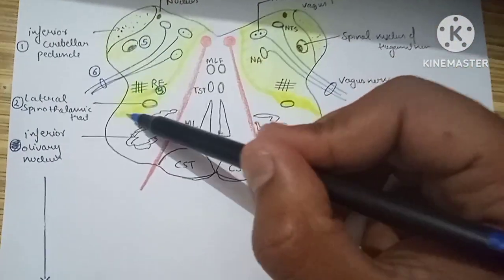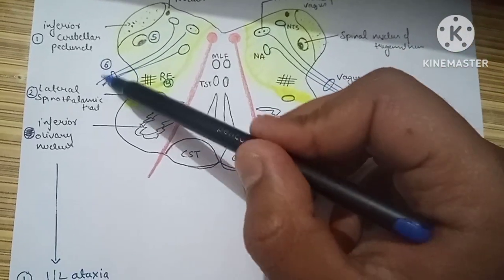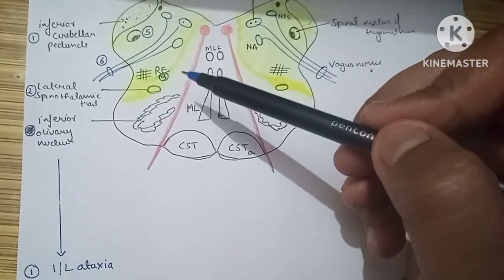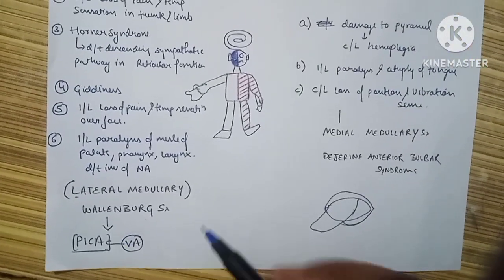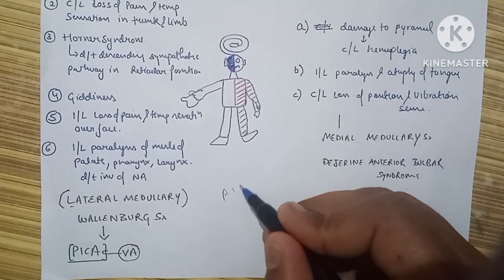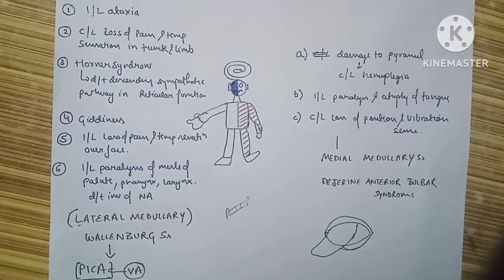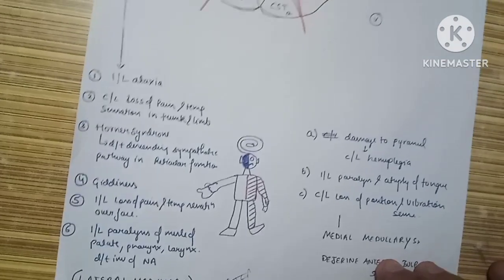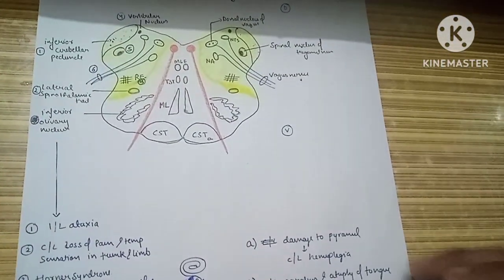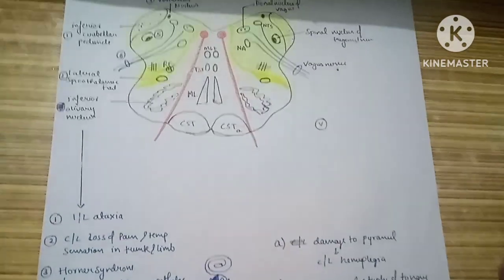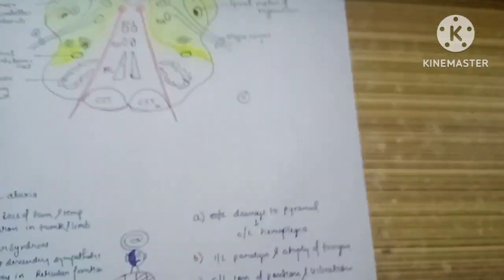The dorsolateral part of the medulla is supplied by PICA, the posterior inferior cerebellar artery. Remember: involvement of PICA leads to dysphagia, whereas involvement of the anterior inferior cerebellar artery (AICA) leads to facial palsy. That concludes the lateral medullary syndrome.